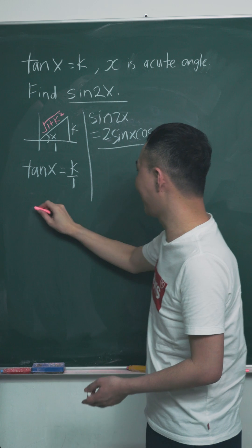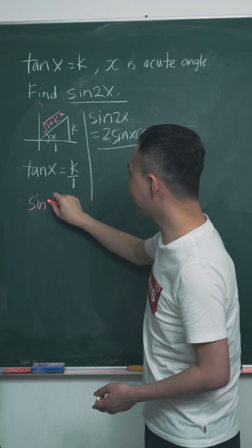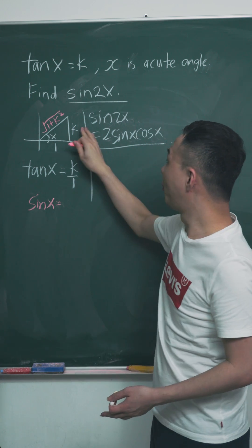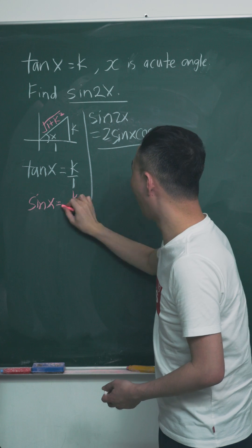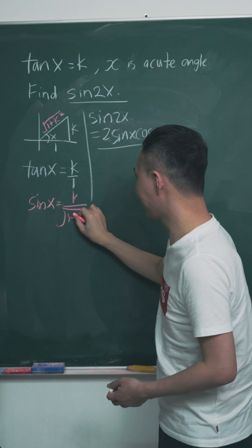So if I want to find my sine x, my sine x is basically the opposite over hypotenuse, which is k over square root of 1 plus k squared.